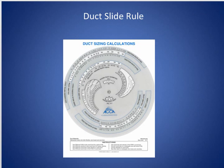Here's the ACCA duct slide rule. We're going to cover this in detail in this course. It's basically a friction chart — just in a circular pattern where you can line things up and turn them around. Instead of straight lines it's all curves. This is the slide rule; this is what you want to use.